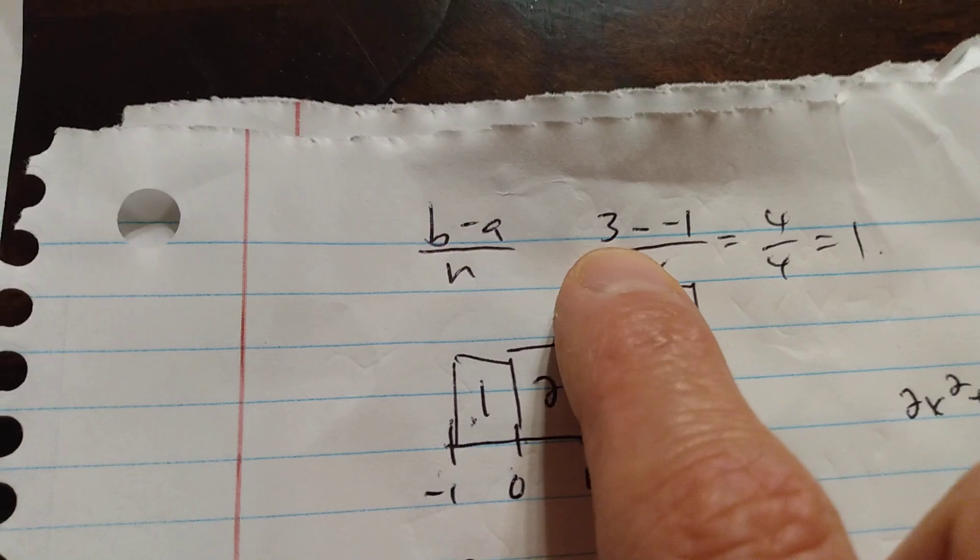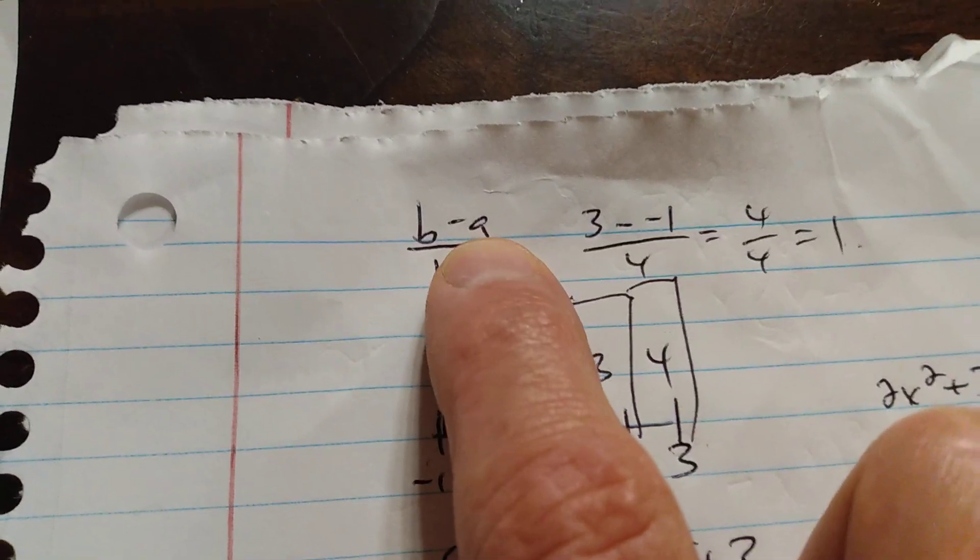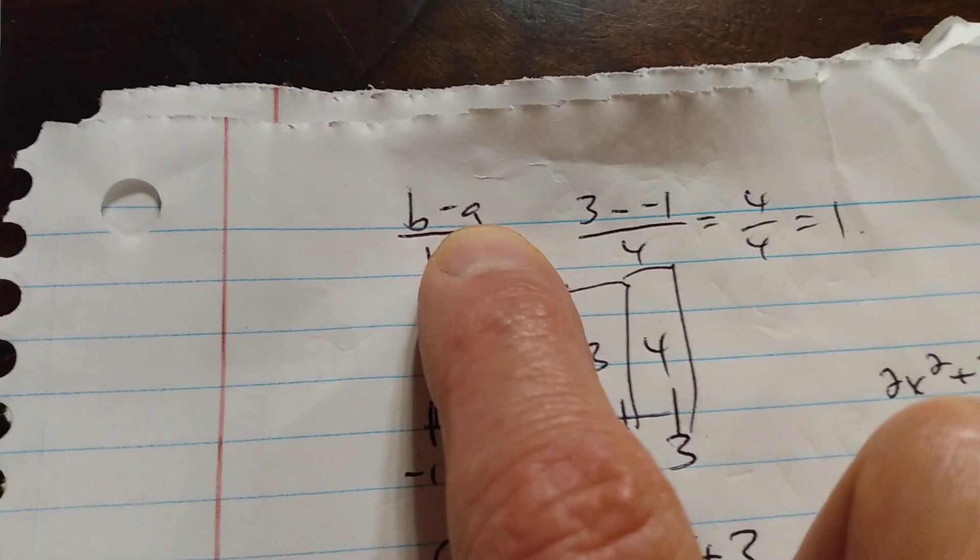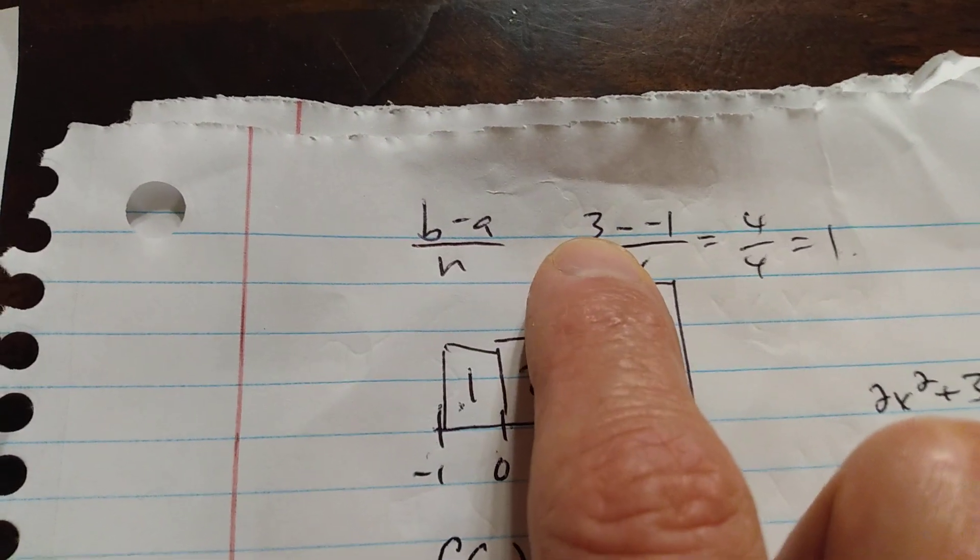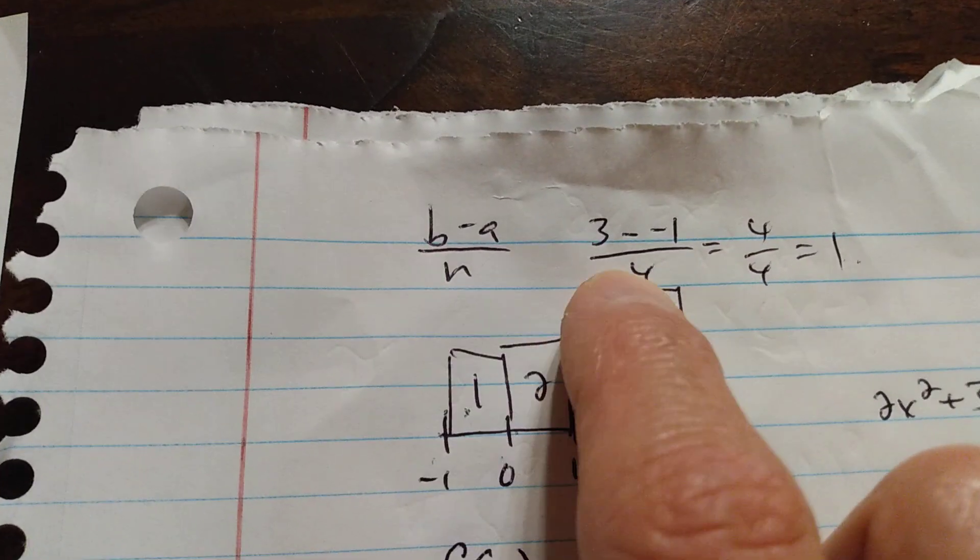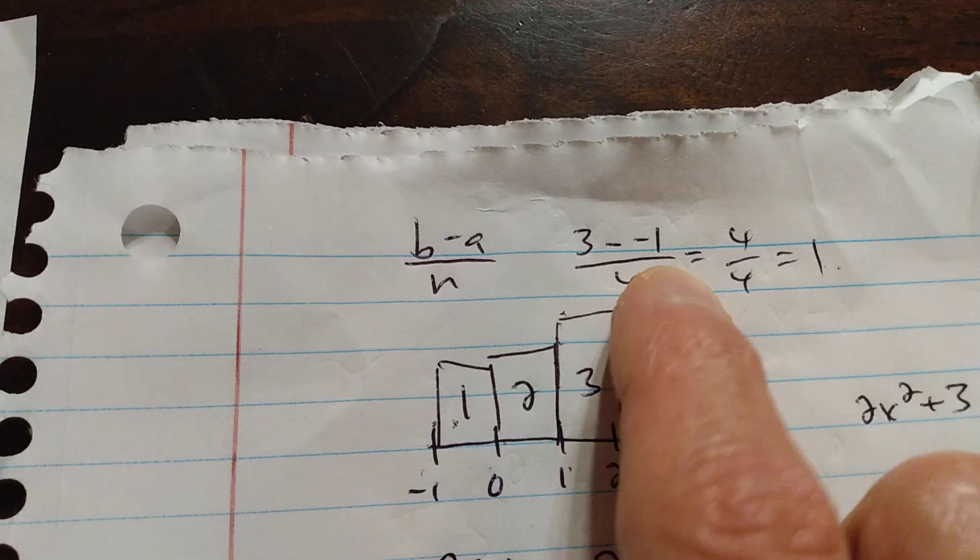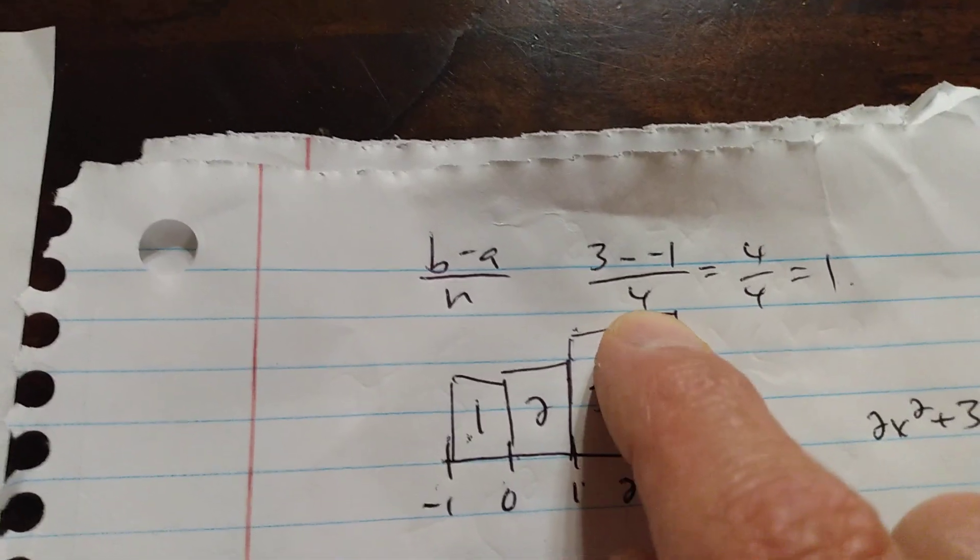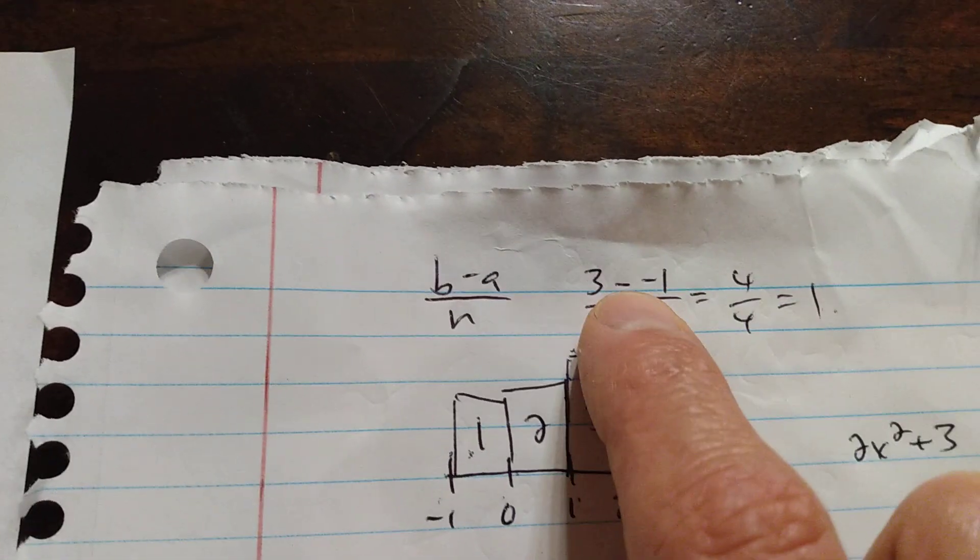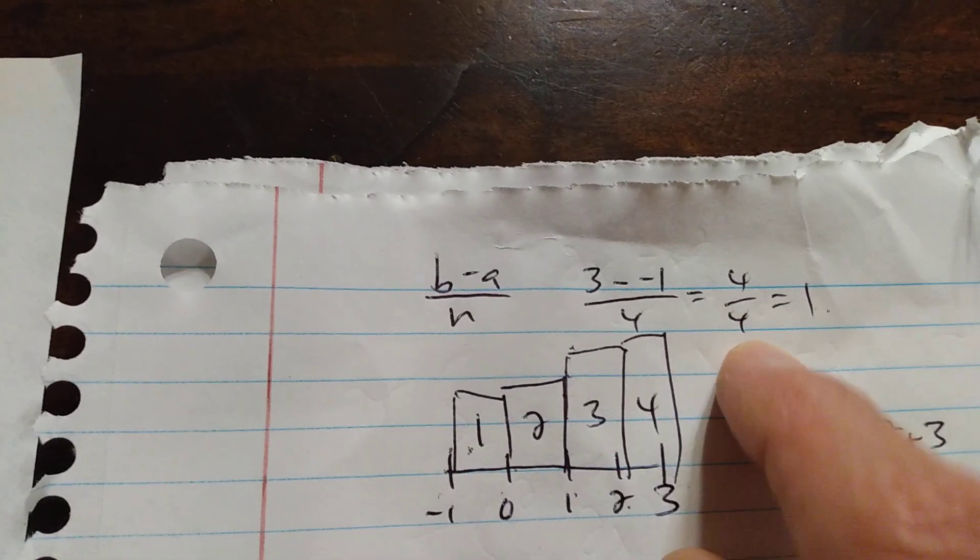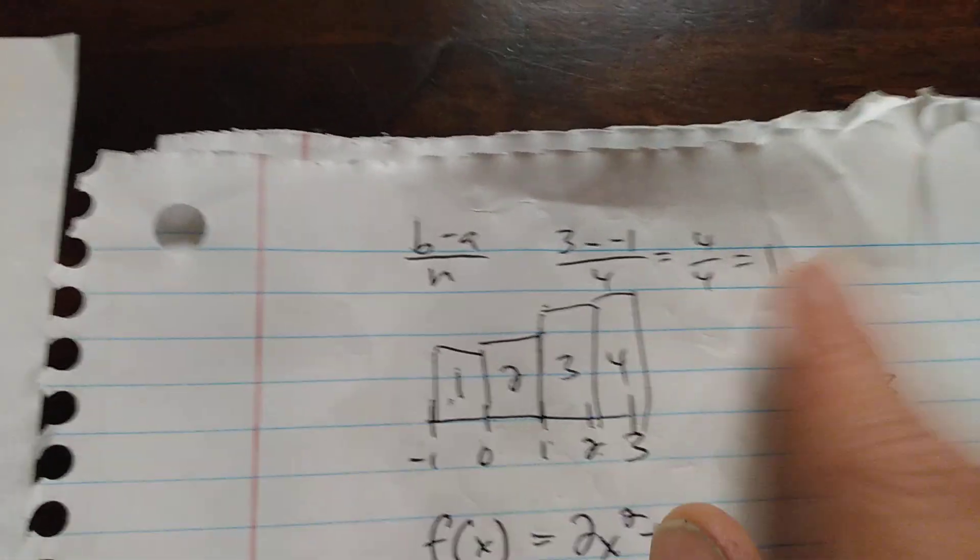So if I sub in the numbers, a is the first number in your interval, the small one, negative 1 in this case. B is the larger number, which is 3. And then the n is the number of rectangles, so they told us 4. So if I do the math, 3 minus negative 1, minus negative is plus, so yeah, 4 over 4, which is 1.